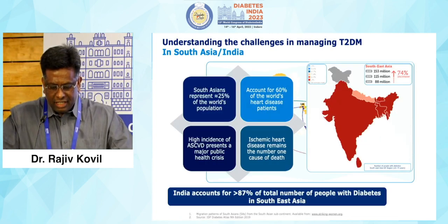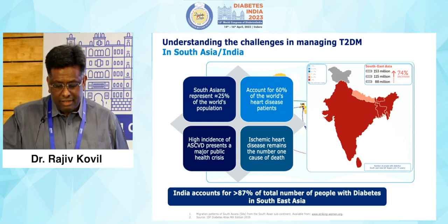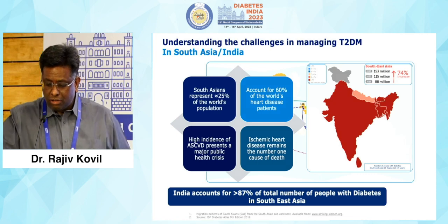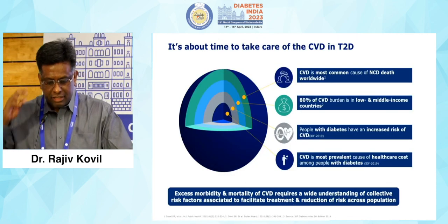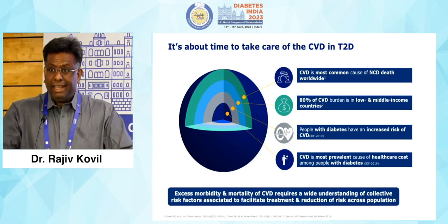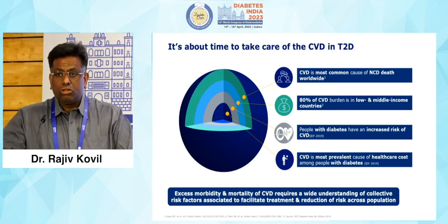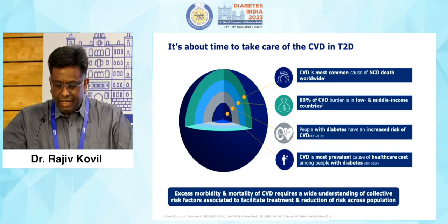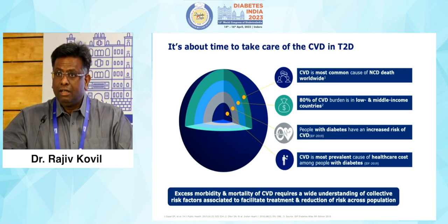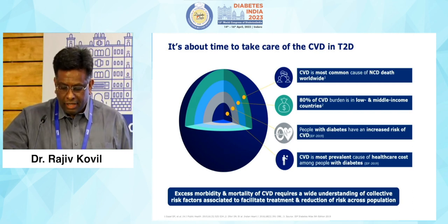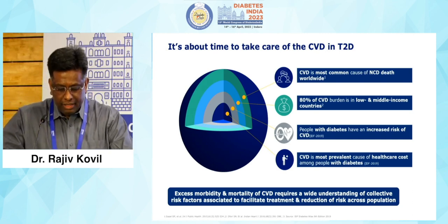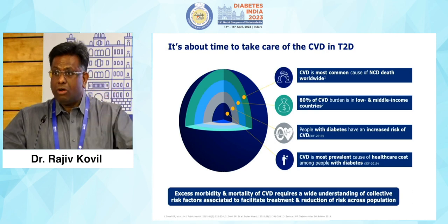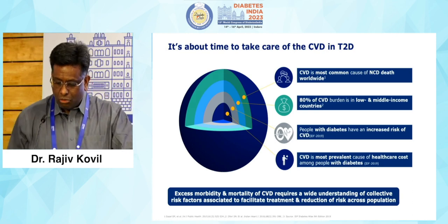What are the challenges? 60% of the world's heart disease is here. High incidence of atherosclerosis and cardiovascular disease. Premature diagnosis of diabetes and premature diagnosis of cardiovascular disease as well. Cardiovascular disease is the most common cause of NCD death — 80% of cardiovascular disease is from low- and middle-income countries. CVD is the most prevalent cause of healthcare costs among people with diabetes, and excess morbidity and mortality go hand-in-hand.